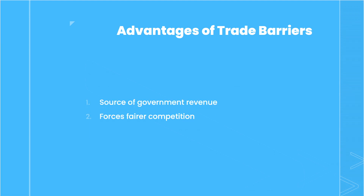The second advantage to imposing trade barriers is that it forces fairer competition. Tariffs are a way to prevent unfair competition in international trade and to eliminate additional price-setting inefficiencies in a global market.